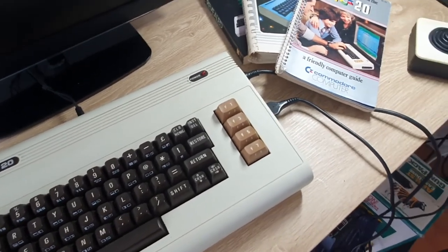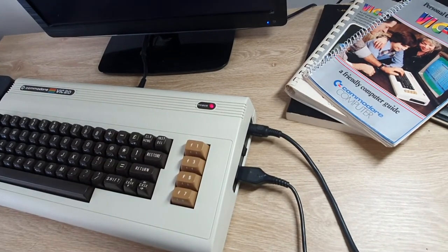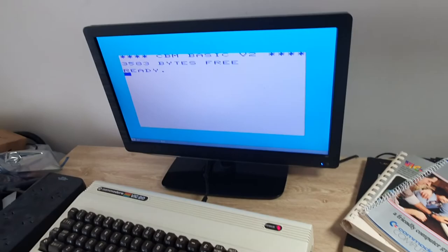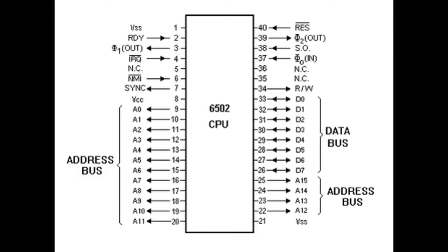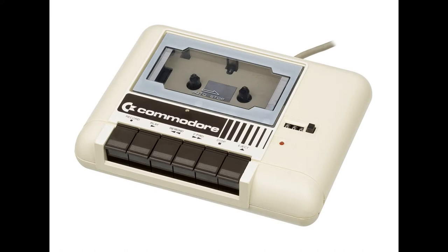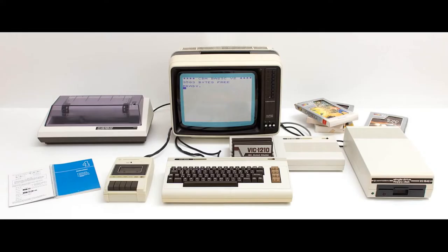It was designed as a low-cost alternative to game consoles with a full-sized keyboard, 5K of RAM, two 8K ROMs, a MOS 6502 CPU, and a MOS 6560 NTSC VIC chip or a MOS 6561 PAL VIC chip. The VIC-20 also had a host of peripherals such as the 1530 tape drive, the 1540 disk drive, printers, modems, memory expansions, and others.